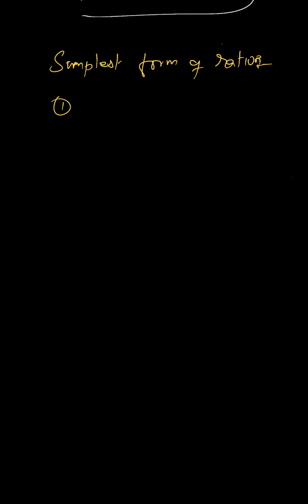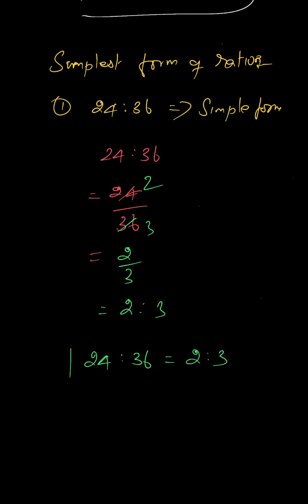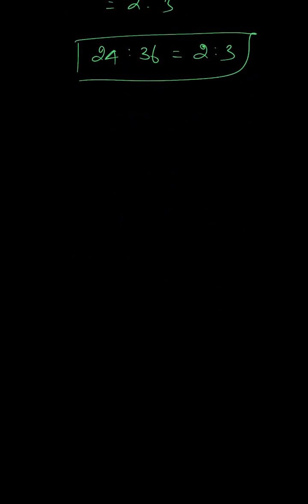Let's simplify the ratio 24 is to 36. We write it as 24 divided by 36. Finding the common factor — 12 divides both — 24 is 2 times 12 and 36 is 3 times 12. So it becomes 2 by 3, which can be written as 2 is to 3. So 24 is to 36 in simplest form is 2 is to 3. We saw this simple form in the last class.